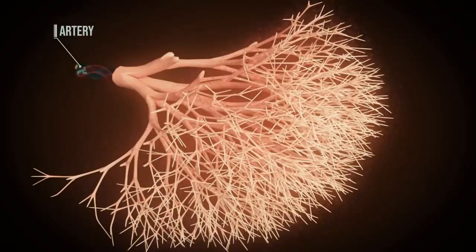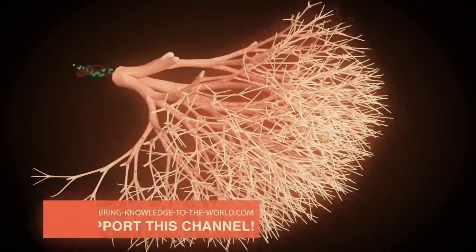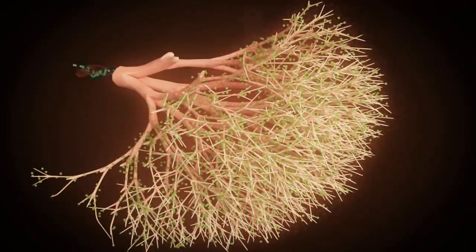However, waste products also reach the villi via the arteries. This allows the fetus to release its waste products, such as carbon dioxide and urea, into the maternal blood. The mother's organism then takes over the excretion of these substances.